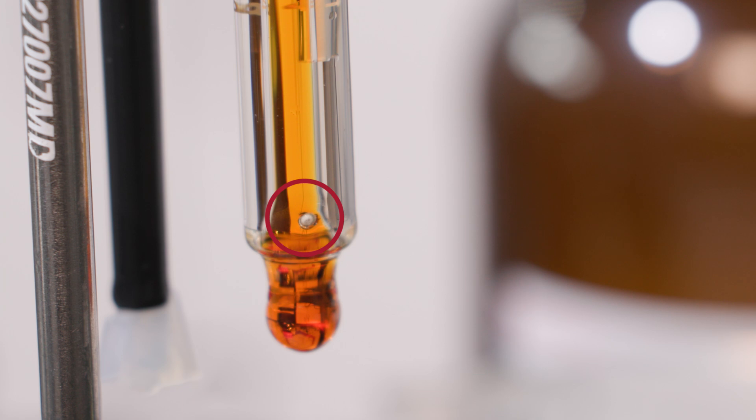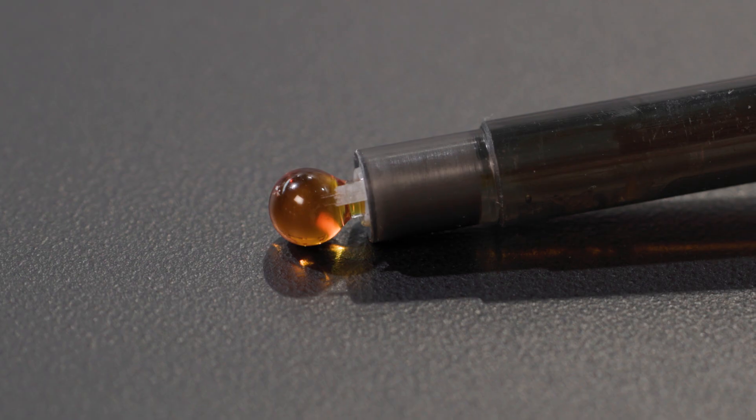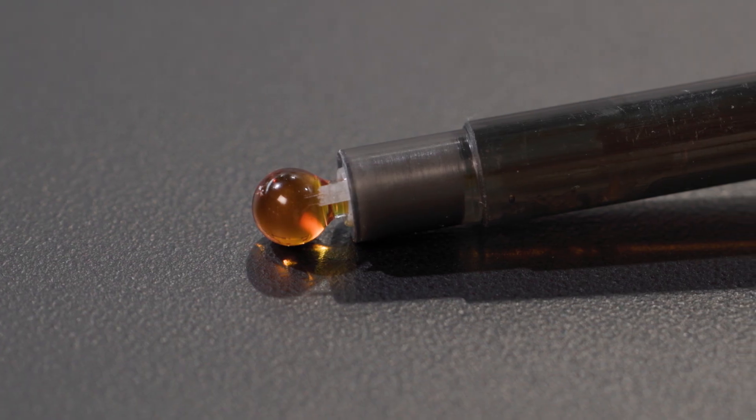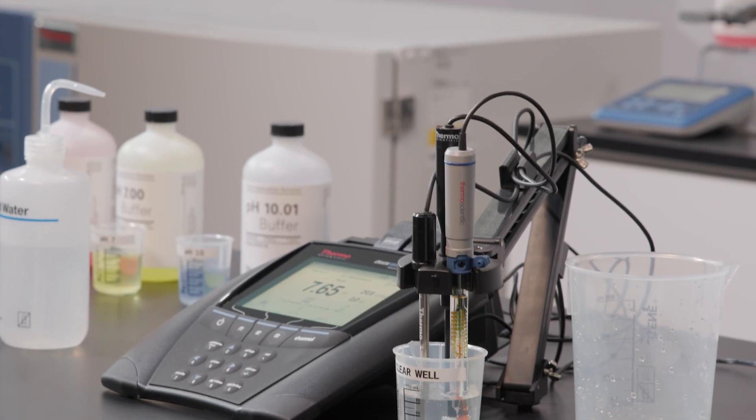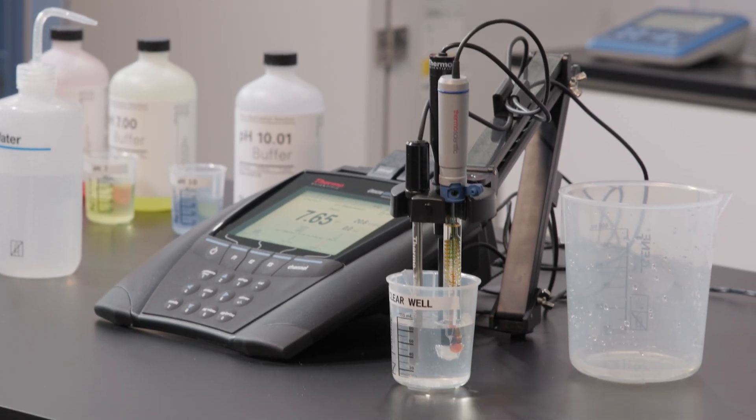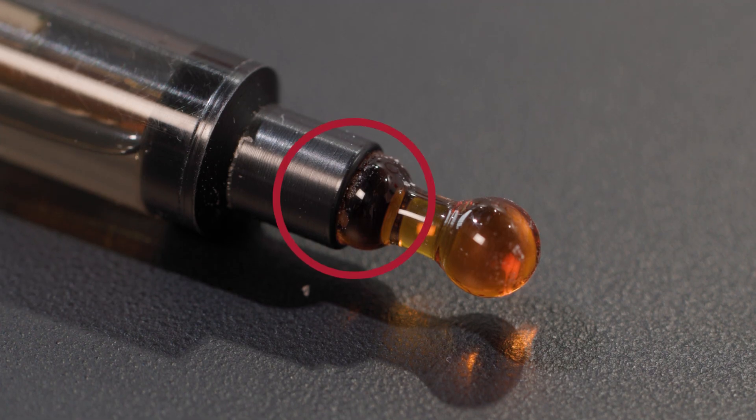Most glass electrodes have a porous ceramic junction, and many epoxy electrodes use a wick or fiber junction. These junctions are appropriate for most general-purpose samples, but can be problematic for others. For better results, use an electrode with a more stable reference system or a more suitable reference junction.